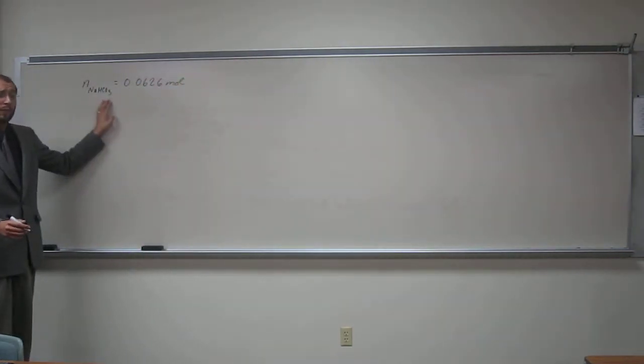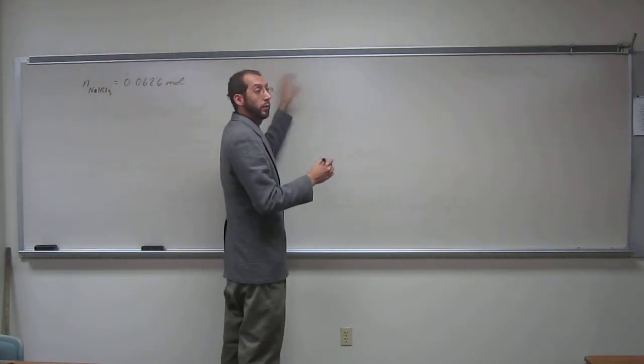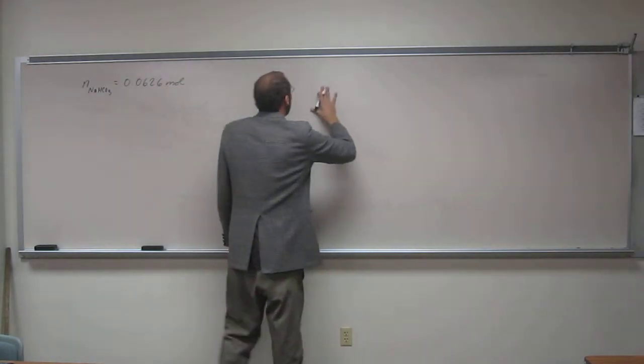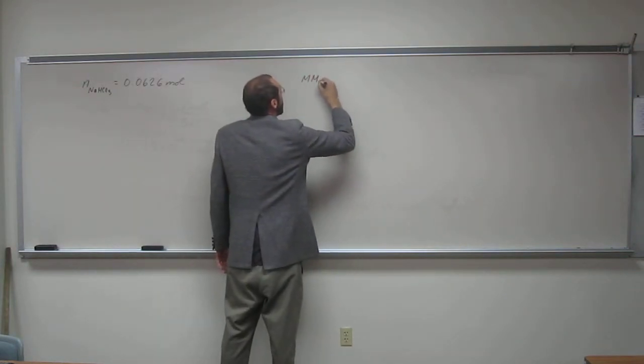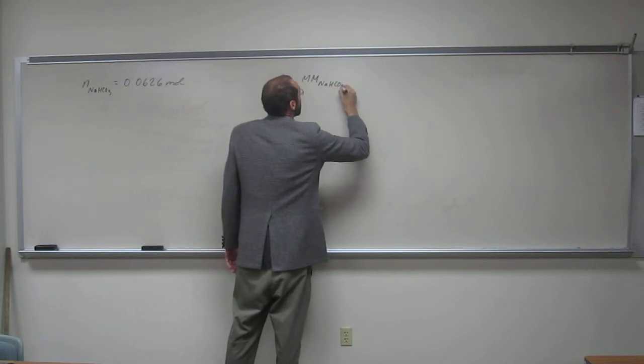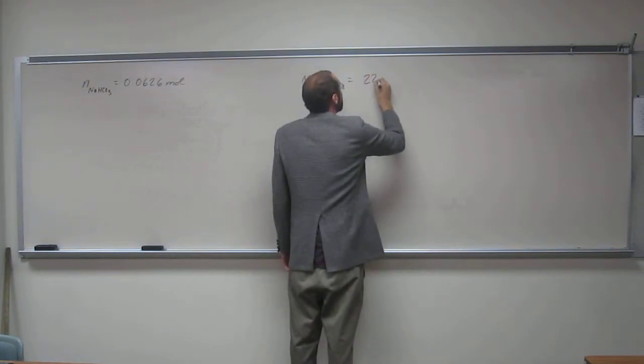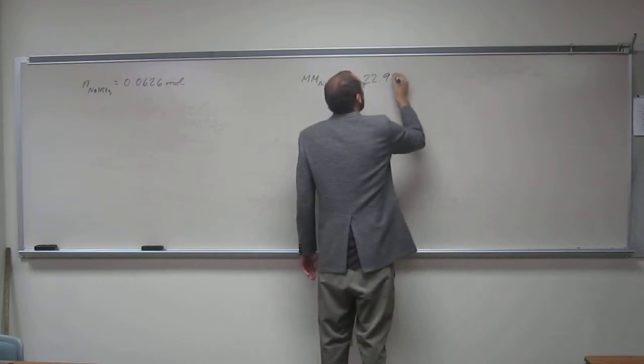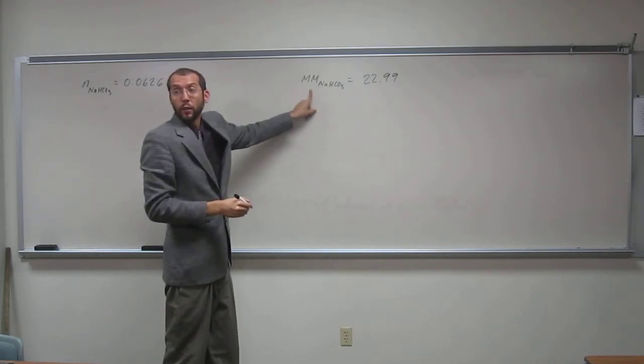Well, we know the formula unit because it's an ionic compound. We're going to figure out the molar mass using that formula unit. The molar mass of sodium bicarbonate is going to be - we have one sodium, so 22.99. And remember, molar mass has units of grams per mole.